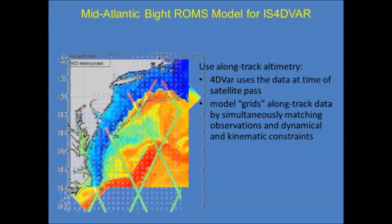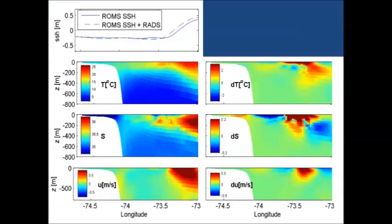All of this is assimilated into their model. One example shows how the model changes when you start to assimilate data from the RADS database — the difference in sea surface height once you assimilate it. This shows a line from the coast out into the open water with temperature, salinity, and velocity along the coast. There is a change right where you have the additional slope in the sea level, which actually creates eddy activity on the coast in quite an important zone.